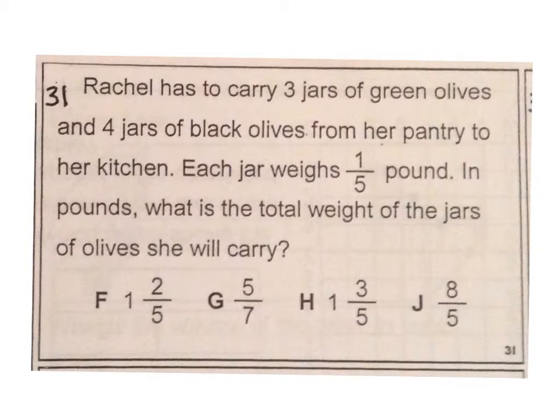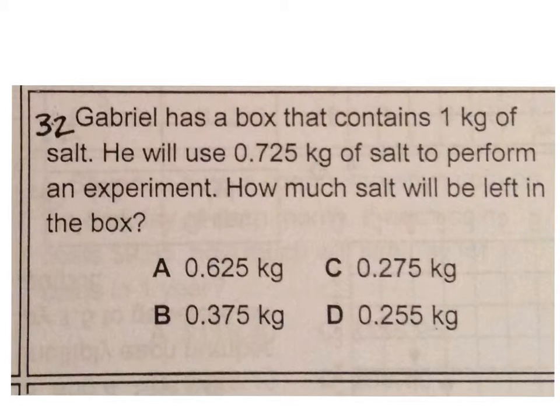Number 31. Rachel has to carry three jars of green olives and four jars of black olives from her pantry to her kitchen. Each jar weighs one-fifth pound. In pounds, what is the total weight of the jars of olives she will carry?